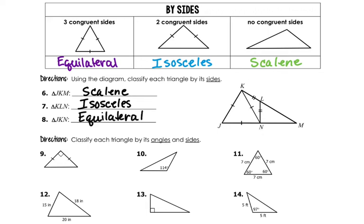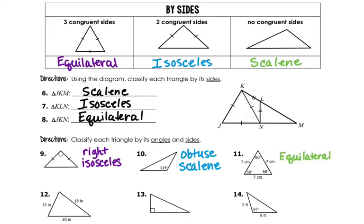Down here at the bottom, we're going to do the same thing but identify using both sides and angles. For number nine, we have a right triangle symbol and two sides that are congruent, so that's isosceles. And then number ten has an obtuse angle and no tick marks, so that's obtuse scalene. And for number eleven, all of the angle measures are the same, so that's equilateral — which means all the sides are the same — so that's also equiangular.